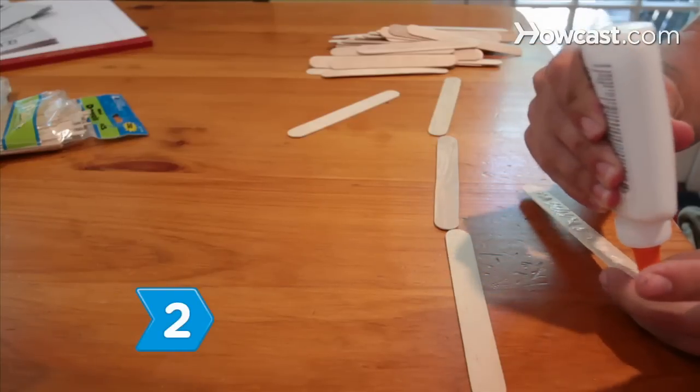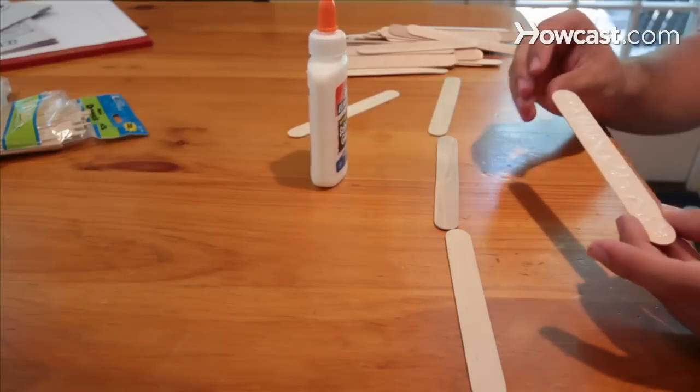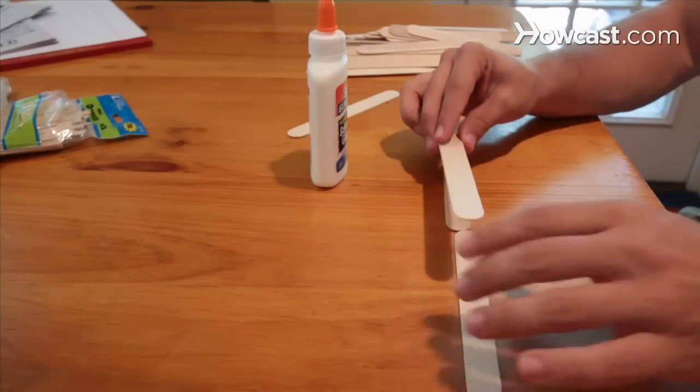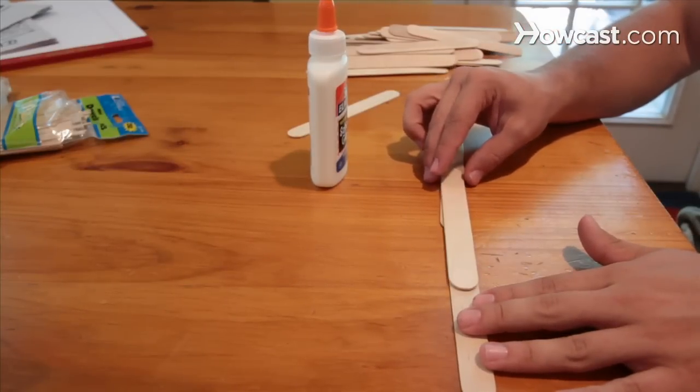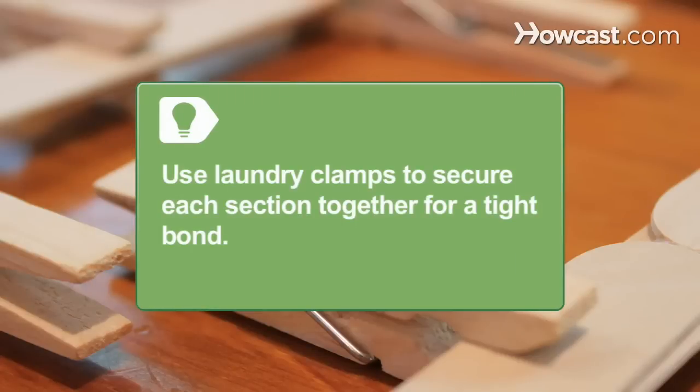Build the main support spans by layering popsicle sticks halfway over each other and gluing them together until you reach the proper thickness. Use laundry clamps to secure your glued sections together until they dry for a tight bond.